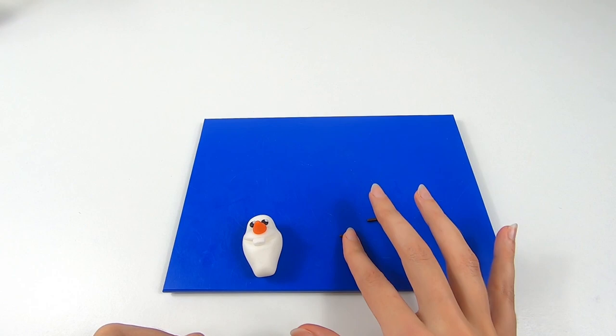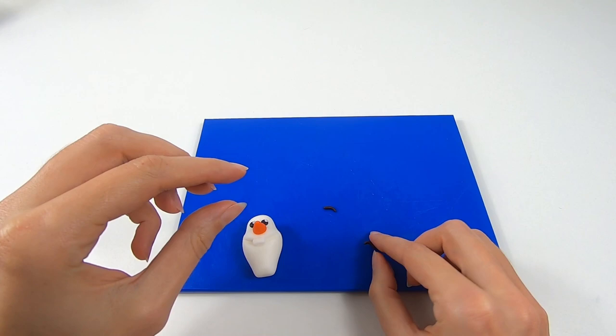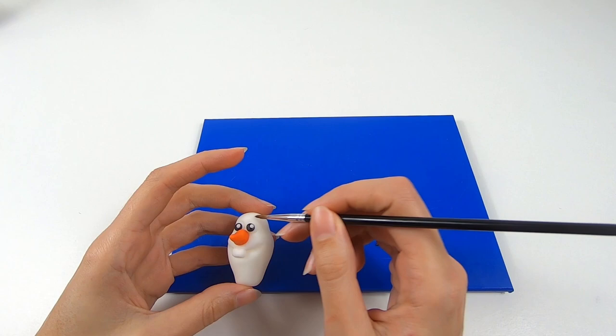We then need to make Olaf's eyebrows using some dark brown modelling paste. Roll your paste out into tiny sausages and shape these into curved eyebrows. And glue these on using some water.